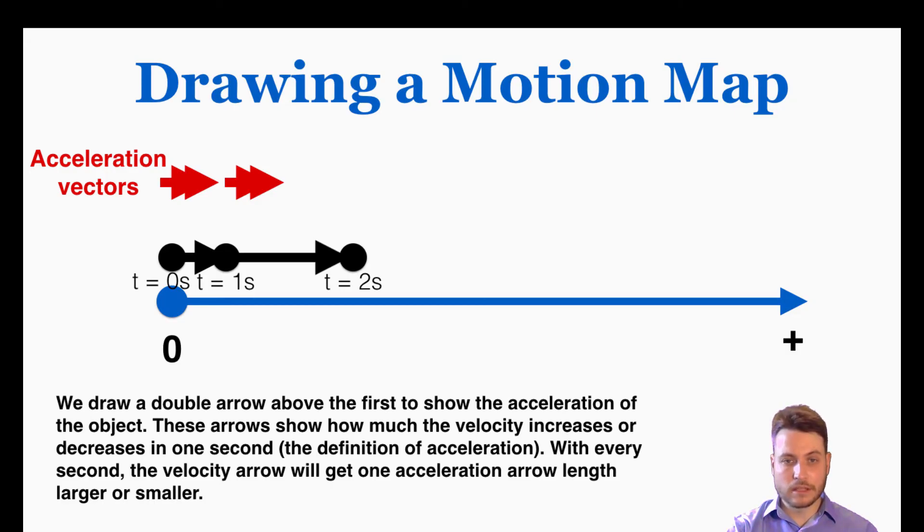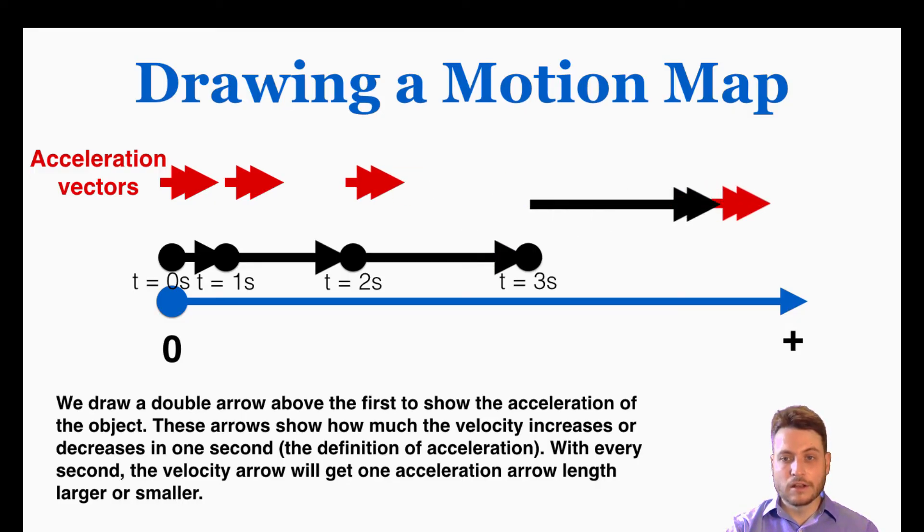So we can do that again. We're assuming that the acceleration is just staying constant here, which it always does. It's very rare to get a changing acceleration. So we connect that arrow and see that it's getting bigger and bigger and bigger. So you can see that we can use these acceleration arrows to show you how much faster the object is getting per second.